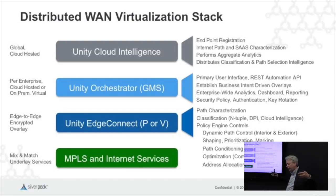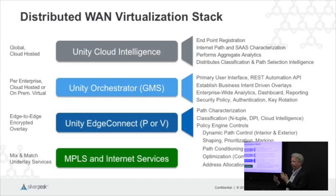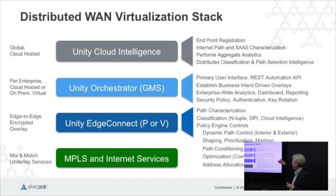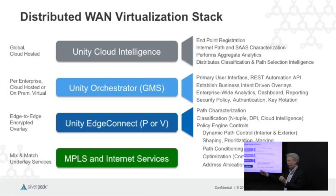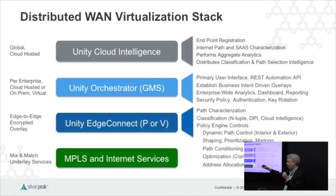In SD-WAN, path characterization and policies mesh together — your policies can refer to things like taking the minimum latency path or maximizing throughput across multiple paths. The policy engine is choosing the best path. A lot of people think about path control in terms of interior routing as an alternative to OSPF — if you've got two edges and several paths going across several networks between them, which is the best one? We're doing that, choosing the lowest latency or best throughput, whatever it might be.